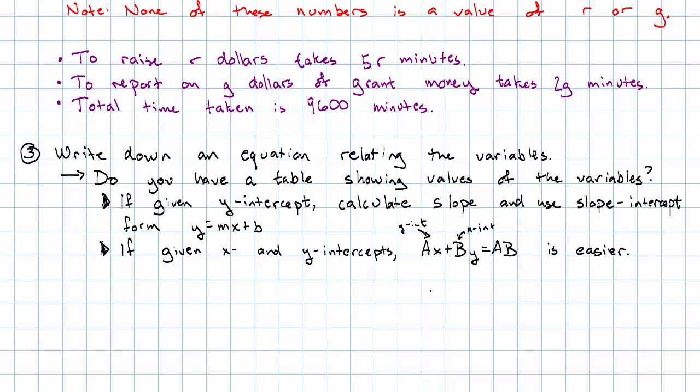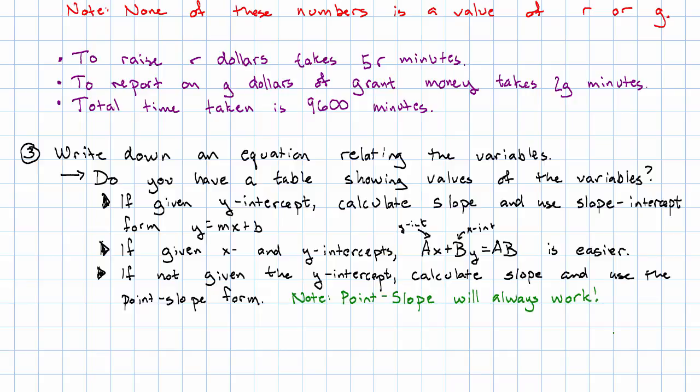Notice that if we're given the x and the y-intercepts, then we were given the y-intercept. It'll also work to calculate the slope and use the slope-intercept form. If none of the points we were given is the y-intercept, we should calculate the slope and use the point-slope form. Notice, the point-slope form will always work. If we've been given information specifically about intercepts, other forms might be easier, but point-slope will always get us the equation given any table of values for the variables.